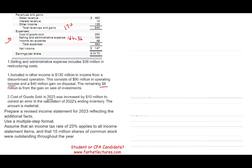Cost of goods sold in 2023 was increased by $10 million to correct an error in the calculation of 2020 ending inventory. The amount is material. Since this is a prior period error in inventory, it doesn't belong on the income statement. Therefore, we must deduct $10 million from cost of goods sold, because there is $10 million in there that should not be there.